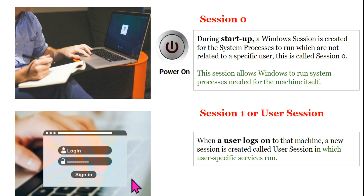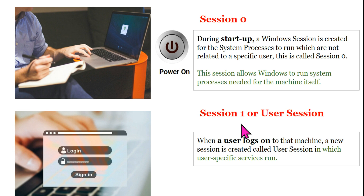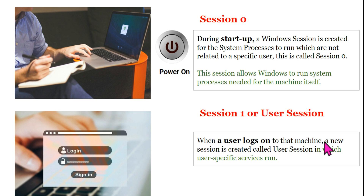Now there is something called session one. Let's say you have multiple user accounts and you click on one — the first user account you log into becomes session one. If after some time someone else switches user and logs into another account while your account is still running in the background, that becomes session two. This is the Windows way of creating required sessions for the activities happening on the laptop. When a user logs on, a new session is created called a user session, in which user-specific services will run.